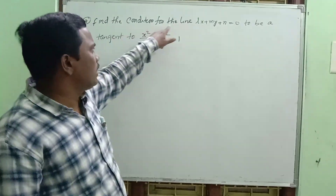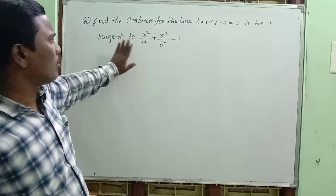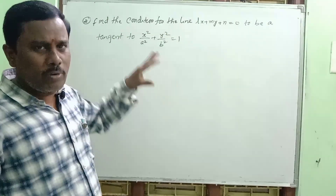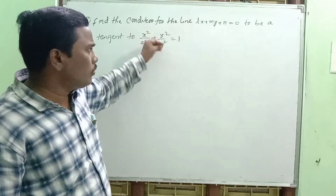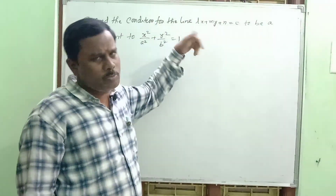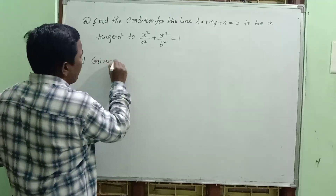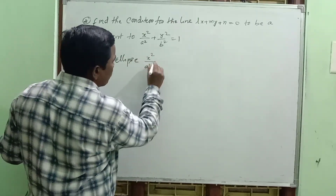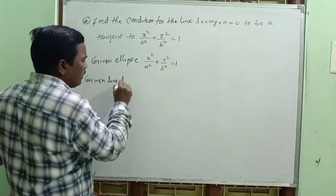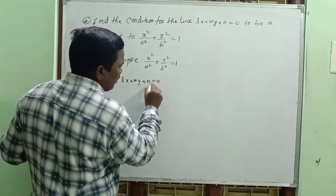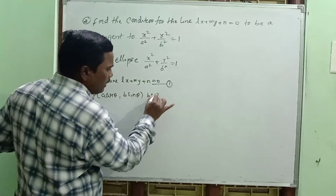Now the same pattern question: find the condition for the line lx plus my plus n equal to 0 to be a tangent to the ellipse x square by a square plus y square by b square equal to 1. Given ellipse: x square by a square plus y square by b square equal to 1. Given line: lx plus my plus n equal to 0. Let the parametric point P equal to (a cos theta, b sin theta) be any point on the ellipse.